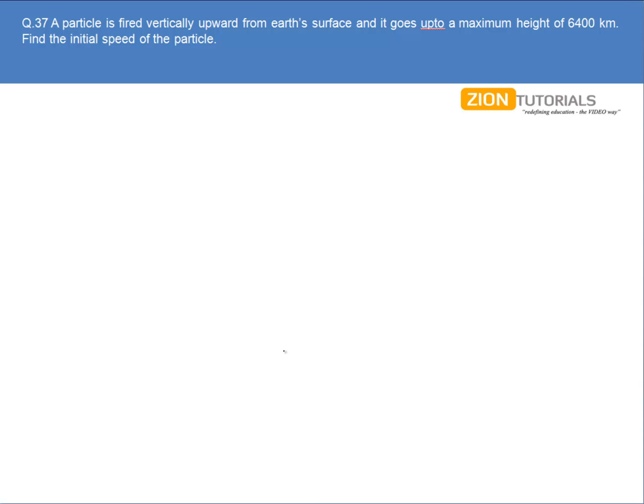A particle is fired vertically upward from Earth's surface and it goes up to a maximum height of 6400 km. Find the initial speed of the particle. This is a pretty simple question using conservation of energy.